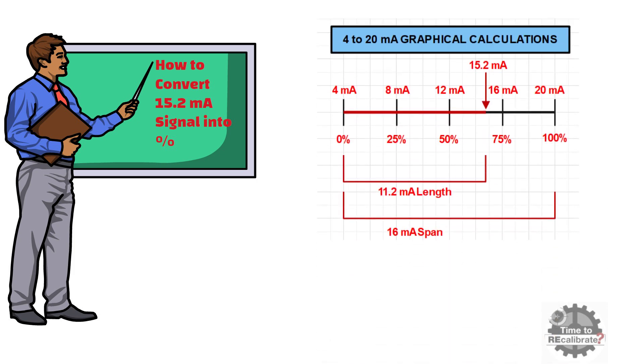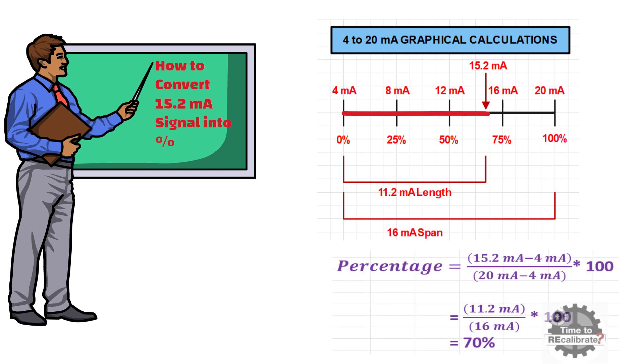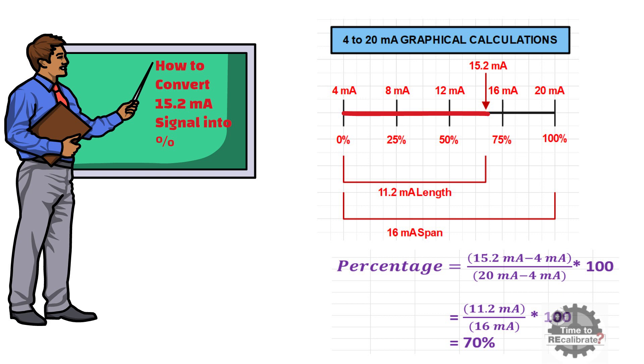As you can see from this graph, this thick line is 11.2 mA long. In other words, it is the distance between 15.2 mA and 4 mA over the total length of 16 mA. So, to convert 15.2 mA signal into percentage, divide 11.2 mA by 16 mA and multiply it with 100. And do the simple math calculation, it will give you 70%.